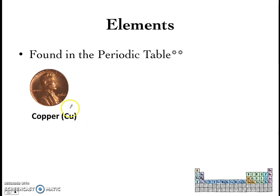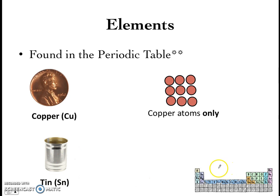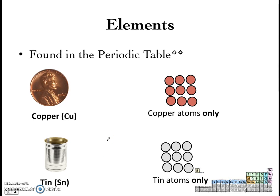Copper can be found in the periodic table and has the symbol Cu, so copper is an element. If we took a copper coin and broke it down, you would only find one type of atom — copper atoms. Similarly, tin is also a chemical element. It can be found in the periodic table with the symbol Sn. If you break down this tin can, you would only find tin atoms inside it. That's what makes copper and tin elements — they only contain one type of atom, and if you break them down by chemical methods, you will not get two or more simpler substances.